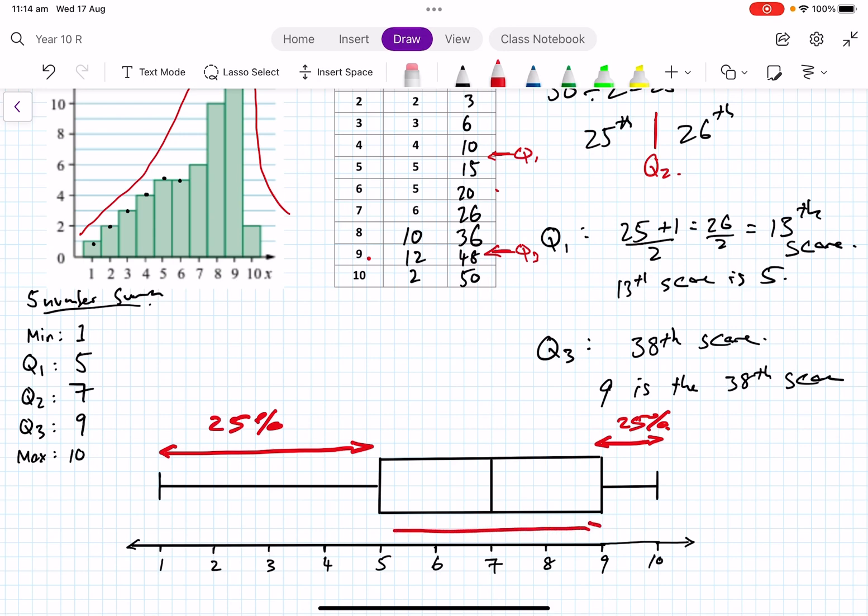That's kind of how we think about it. And remember that always remember that the middle section is 50 percent. 50 percent of our scores are in the box.